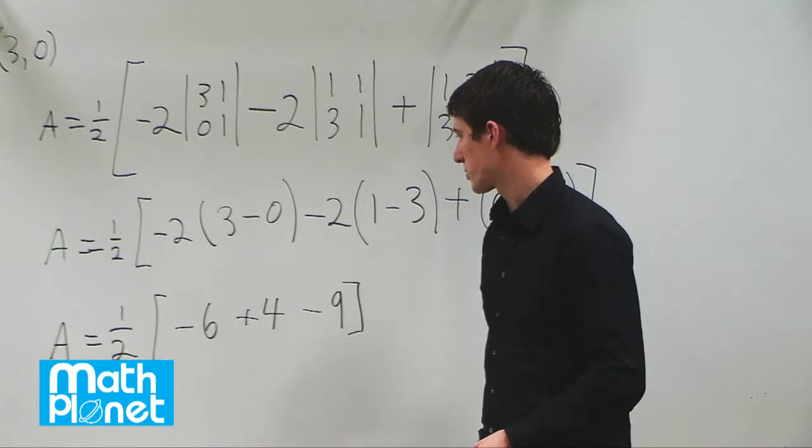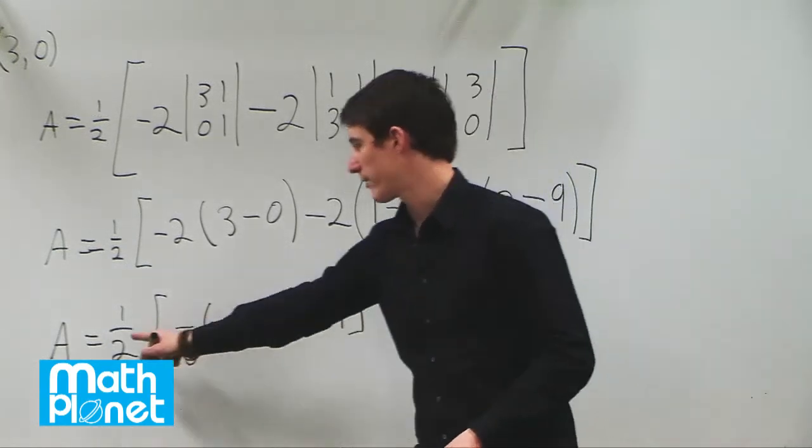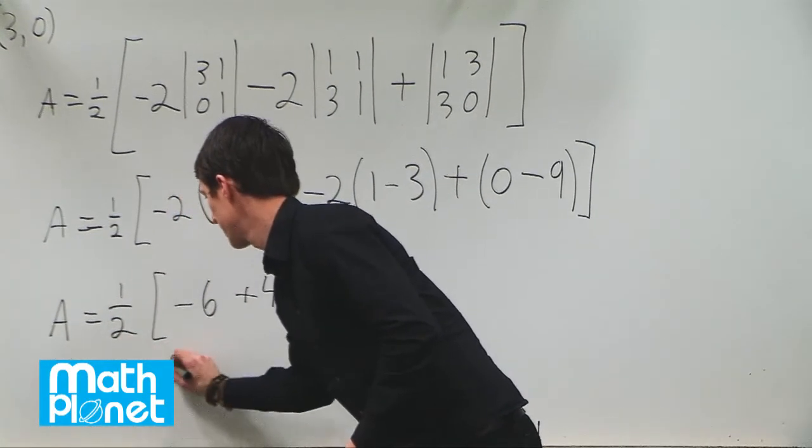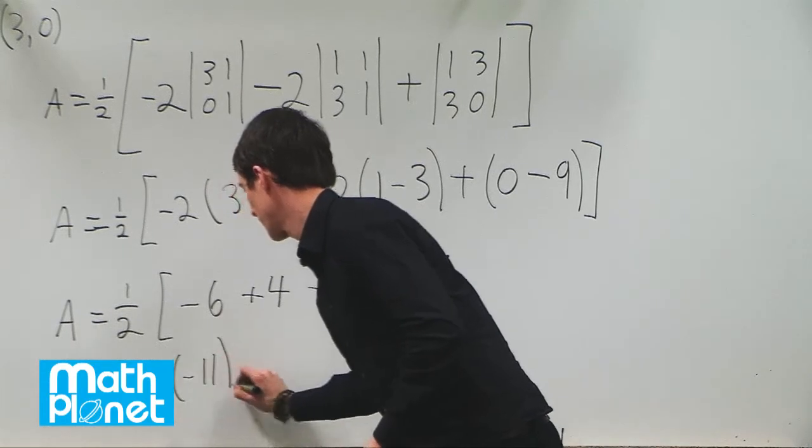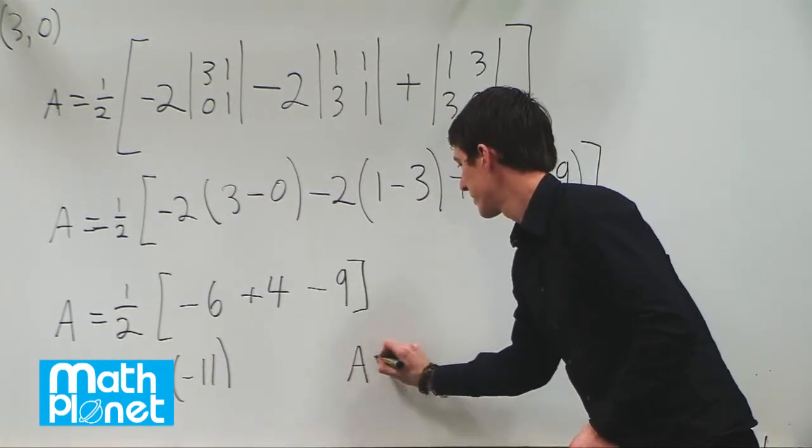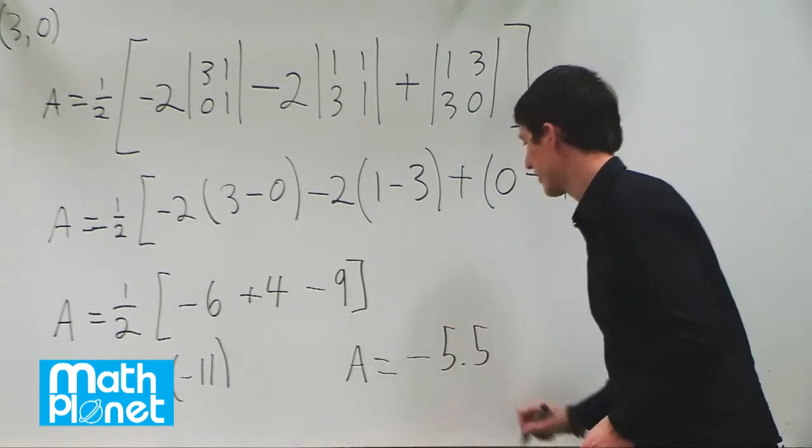Then if we work this out, we get negative 6 minus 9, which is negative 15, plus 4, which is negative 11. And finally, a equals 1 half times negative 11, which is, a is equal to negative 5.5 square units.